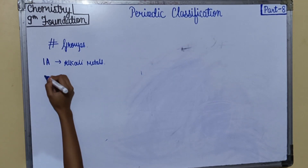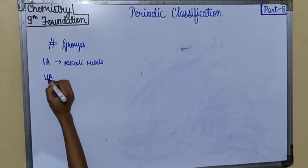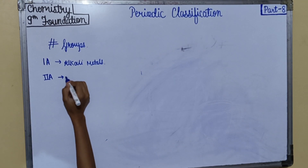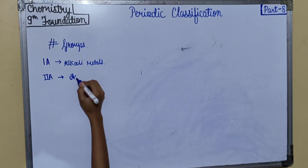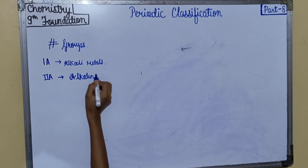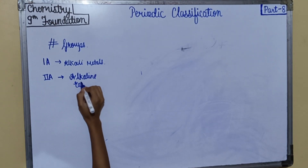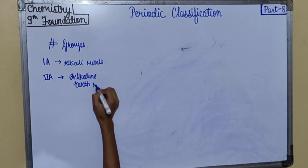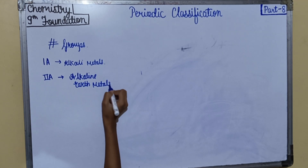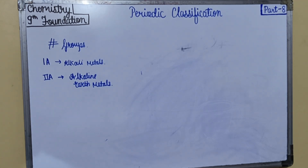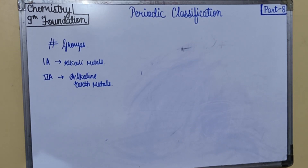Second A is alkaline earth metals. The reason for that is these oxides are alkaline in nature and exist in the earth, hence these elements are called alkaline earth metals.